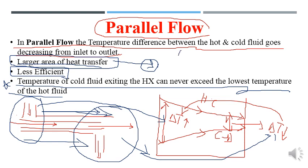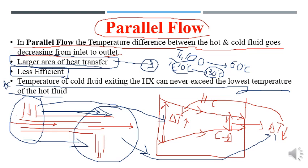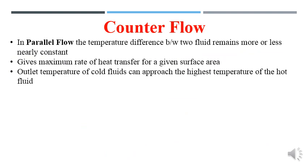For example, if the hot fluid enters at 100°C and exits at 60°C, the cold fluid exiting at 30°C can never exceed 60°C — the lowest exit temperature of the hot fluid. In parallel flow, the cold fluid outlet temperature is always below the minimum temperature of the hot fluid.